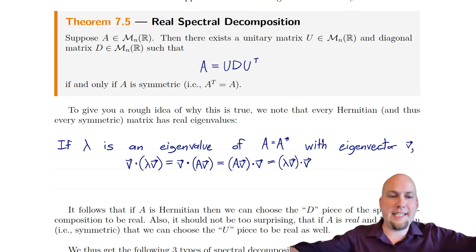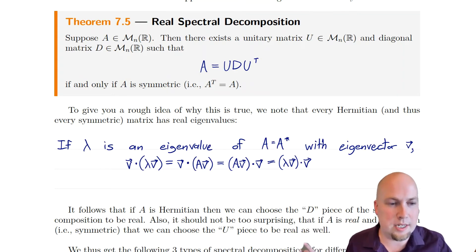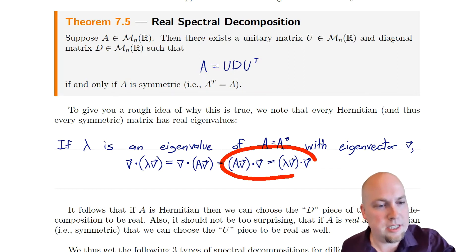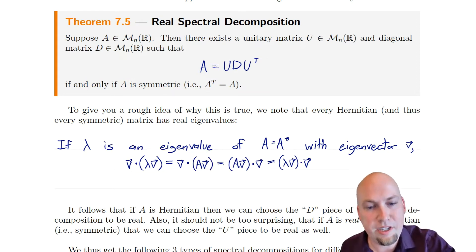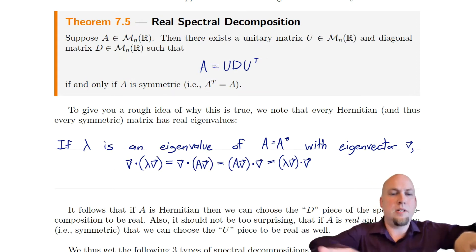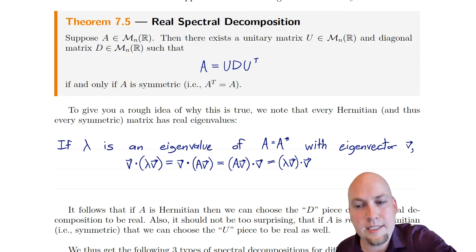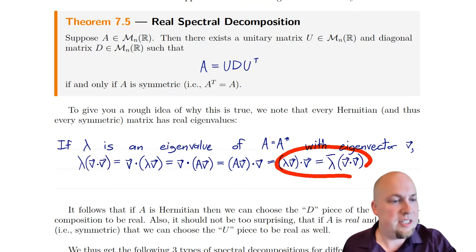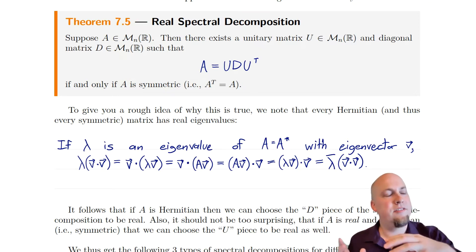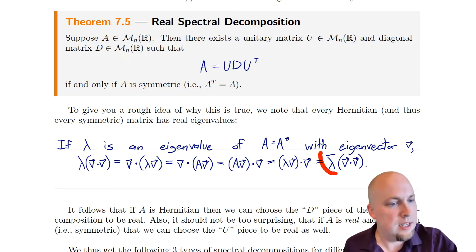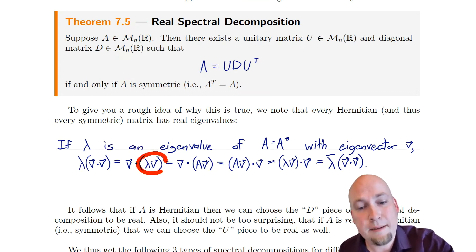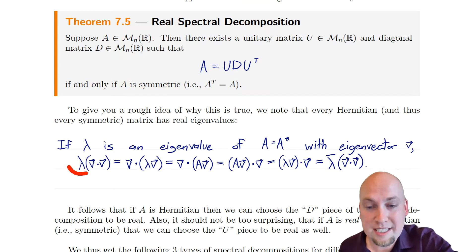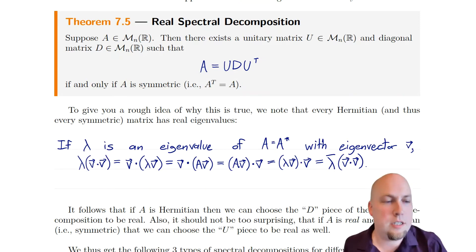Now we expand and simplify both sides. On the right-hand side, we use the eigenvalue equation: AV becomes lambda V. Same on the left-hand side. Then pulling scalars outside: lambda V dotted with V gives a lambda bar out front, because pulling a scalar out of the first component gives its complex conjugate. On the left, pulling lambda out of the second component gives just lambda itself, since the dot product is linear in the second entry but conjugate-linear in the first.